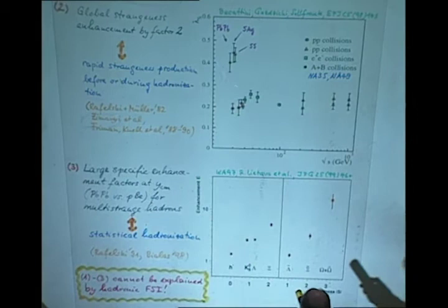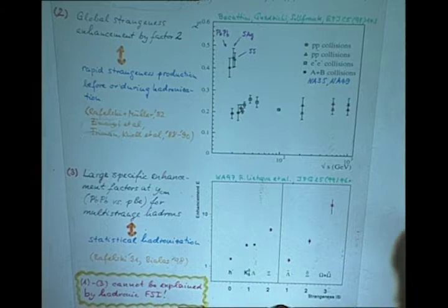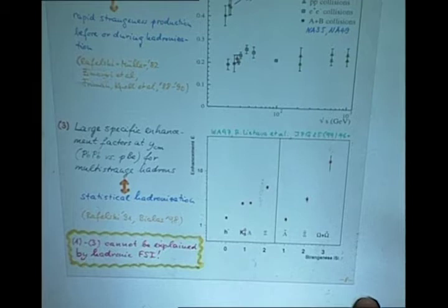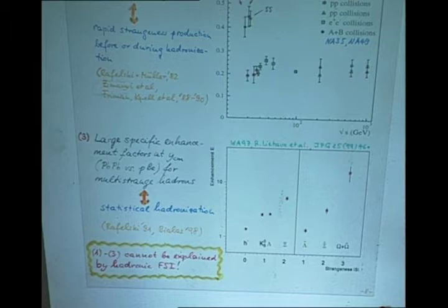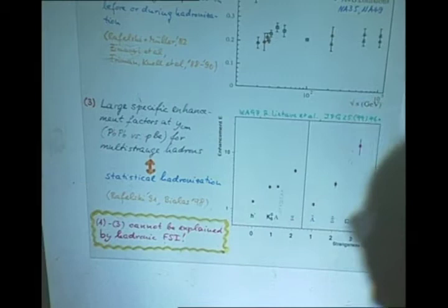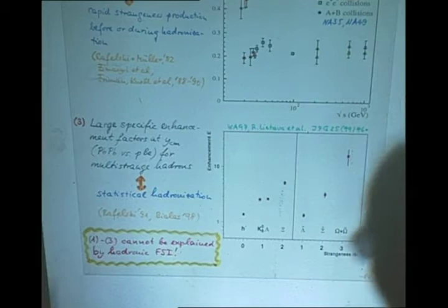When you look at how this enhanced strangeness is distributed among the strangeness carrying particles in the final state, you find a very striking behavior. Particles which contain several units of strangeness profit from this enhancement much more strongly than particles which have only one unit of strangeness. This again supports the interpretation that this is a statistical process which redistributes the available strangeness according to statistical laws.